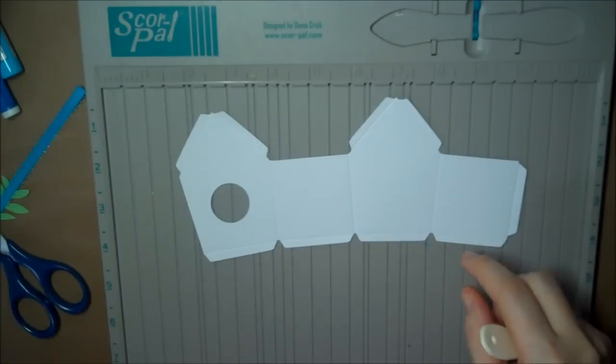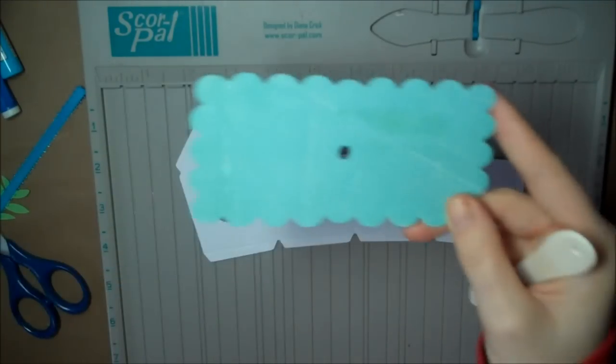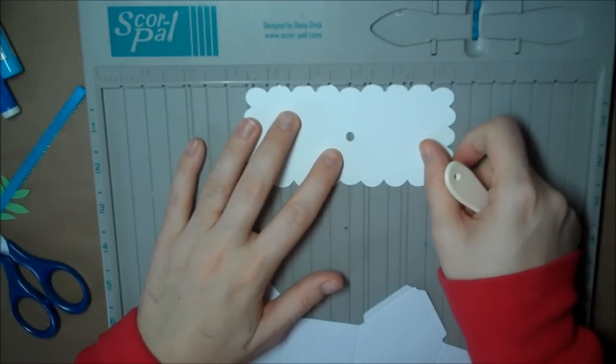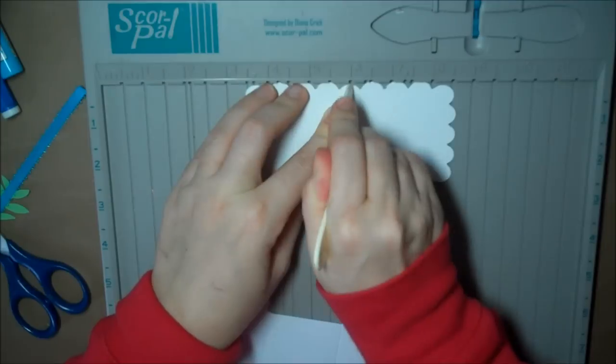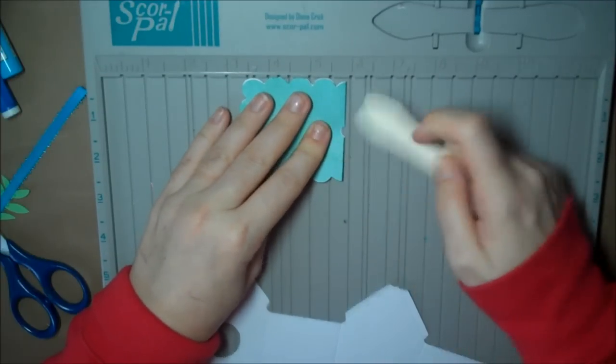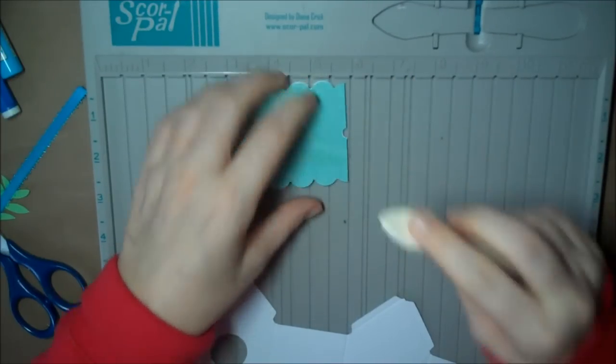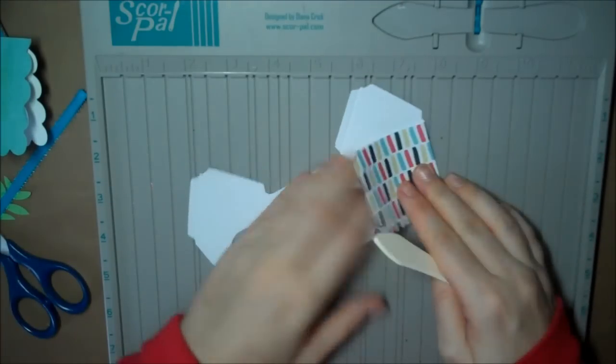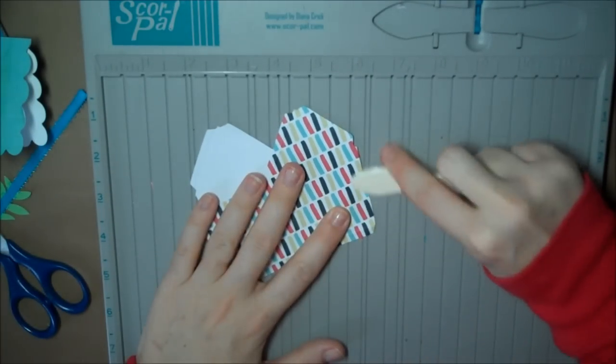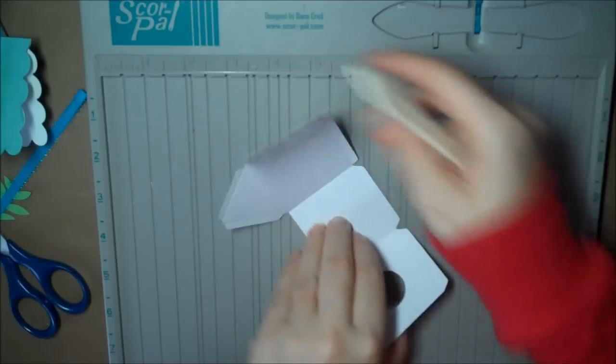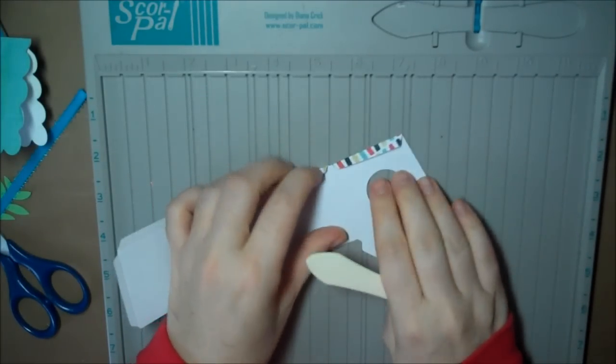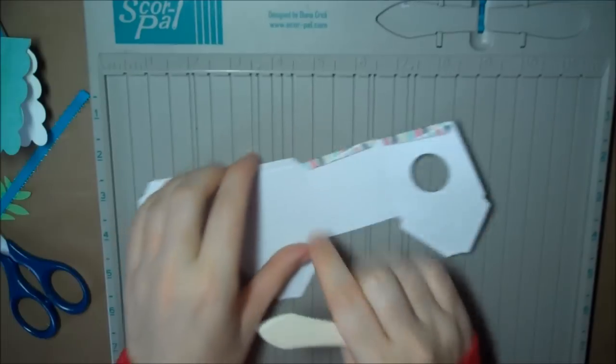And the roof is cut out and it has a hole already for you. So try to center the hole on a line and score that as well. Okay, so there's the roof. Now, the thing about scoring and bone folder is you can get nice, crisp folds so your box goes really nicely together.